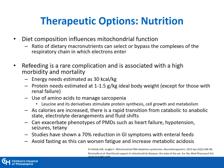Nutrition is a very important therapy, and we know that diet composition influences mitochondrial function. Refeeding is a complication, and although rare, it is associated with high morbidity and mortality. Energy needs should be estimated at around 30 kcal per kg and protein needs at about 1 to 1.5 grams per kg. As calories are increased, there is a rapid transition from a catabolic to anabolic state, and there can be electrolyte and fluid shifts. Studies have shown almost 70% reduction in GI symptoms with enteral feeds. One must avoid fasting because fasting can worsen fatigue and increase metabolic acidosis.